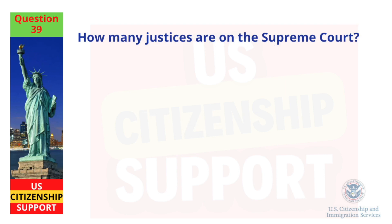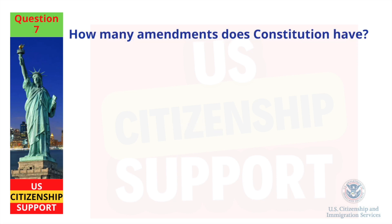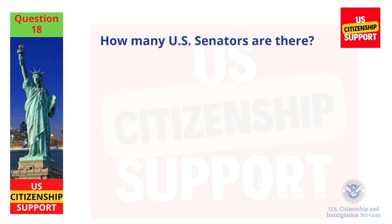How many justices are on the Supreme Court? Nine. How many amendments does the Constitution have? Twenty-seven. How many U.S. Senators are there? One hundred.